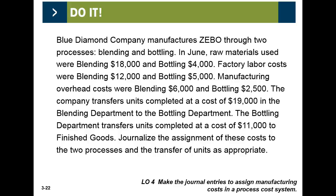Blue Diamond Company manufactures Z-Ball through two processes: blending and bottling. In June, raw materials used were blending $18,000 and bottling $4,000. Factory labor costs were blending $4,000 and bottling $5,000. Manufacturing overhead costs were blending $6,000 and bottling $2,500. The company transfers units completed at a cost of $19,000 from the blending department to the bottling department. The bottling department transfers units completed at a cost of $11,000. Journalize the assignment of these costs to the two processes and the transfer of units.